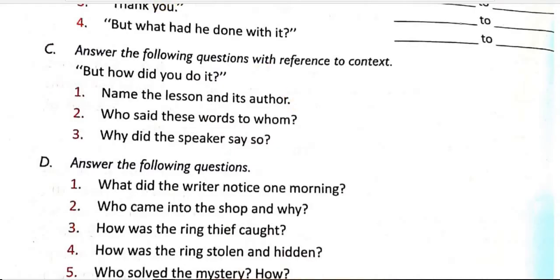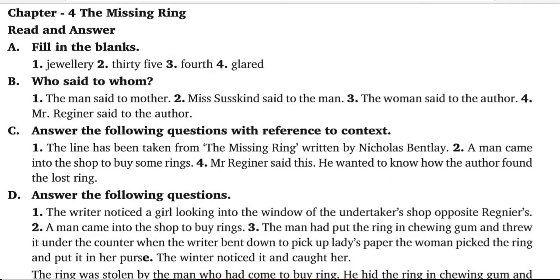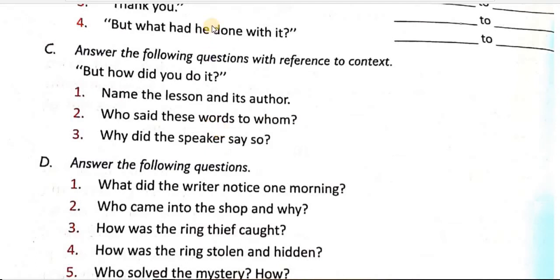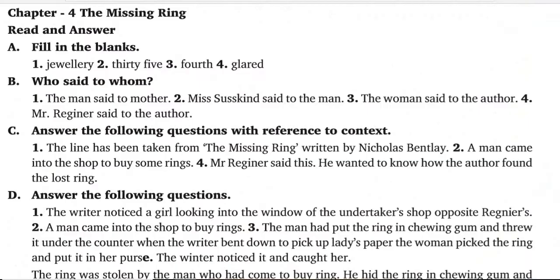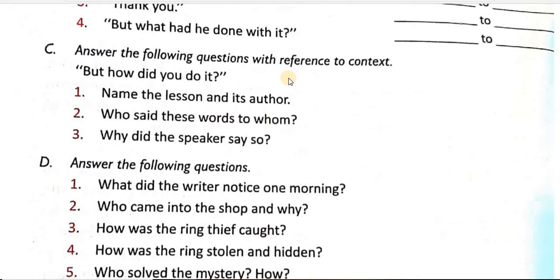Who said these words to whom? Ye words kis nai kis ko kahi thi? A man came into the shop to buy some things. Ye us baat ko usne usko kaha tha. Why did the speaker say so? Speaker ne ye baat kyun kahi? Mr. Regnier said this — he wanted to know how the author found the lost ring. Usne ye jaanna chahata tha ki angoothi jo khoyi hai woh kaisi milegi.